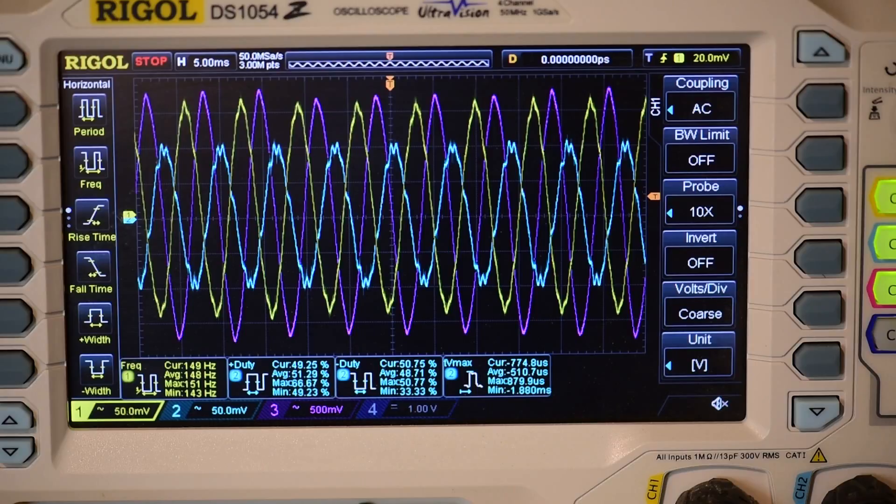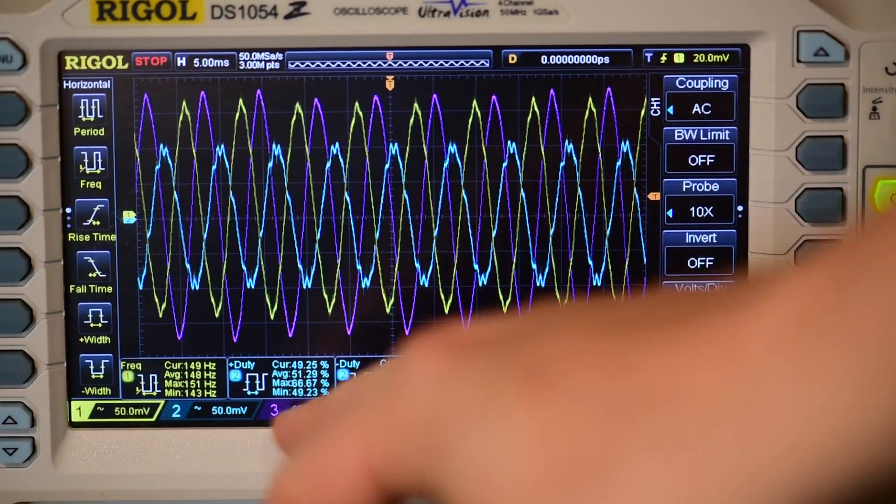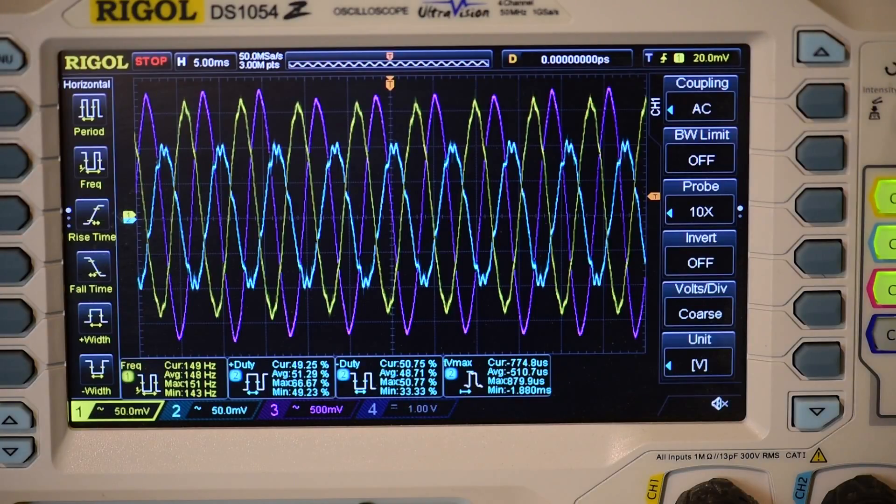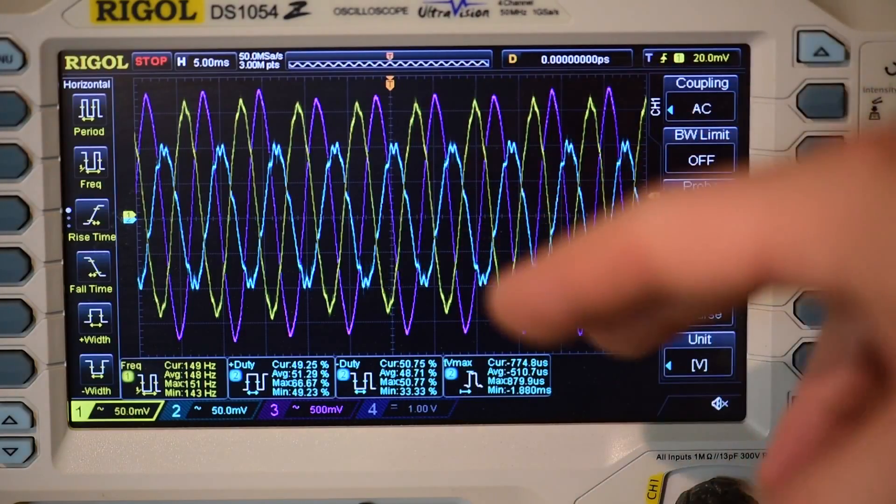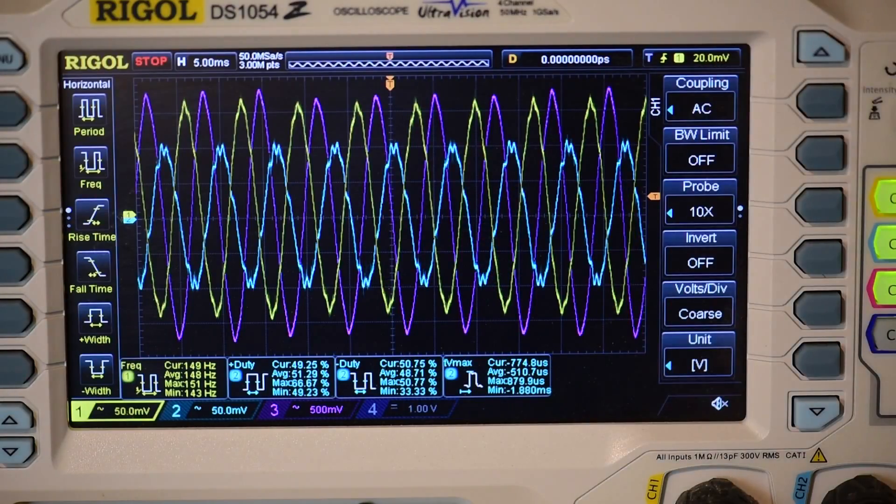So here you see this pretty picture. Now channel one and two are on 50 millivolts per division. Channel three is still at 500 millivolts per division, showing that we have a 10 times less magnetic field being generated by the first two coils as opposed to the third coil.